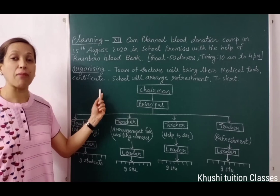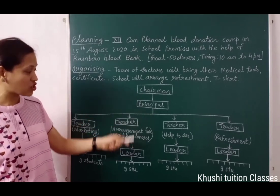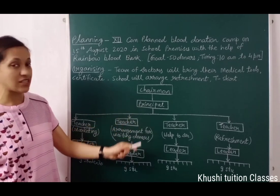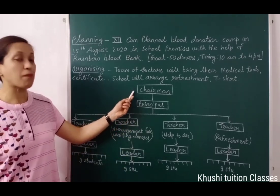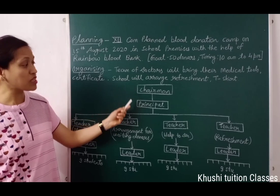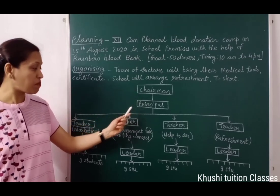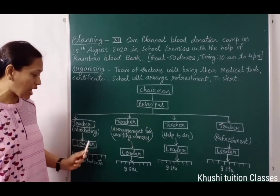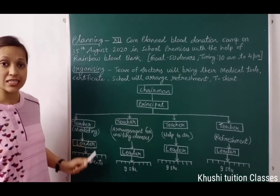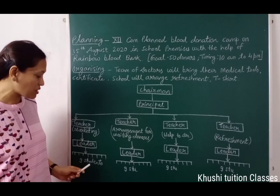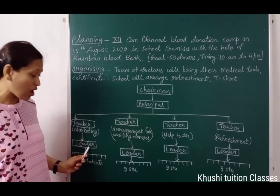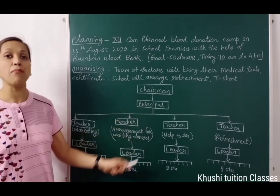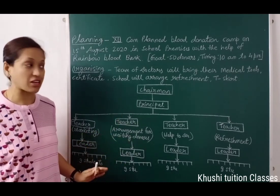अब resources arrange करने के बाद हमें एक organizational structure setup की जरूरत है. इस organizational structure में सबसे top position पर है Chairman, उसके बाद है Principal, Principal के बाद हैं four in-charge teachers, और in-charge teachers के अंडर में 10 students की एक team है. इन 10 students में से एक student leader रहेगा और 9 students इस leader के अंडर में काम करेंगे.